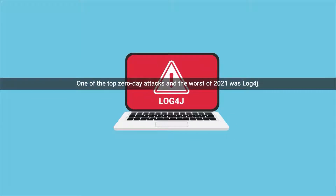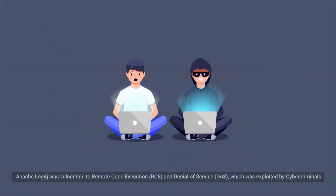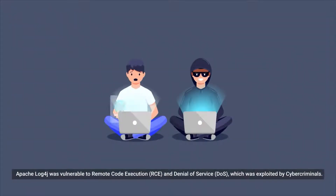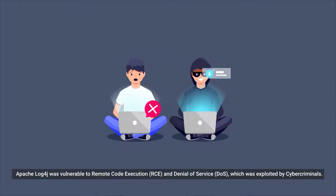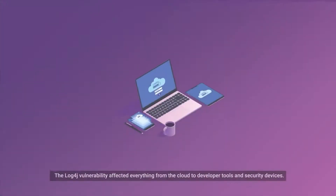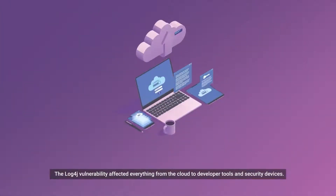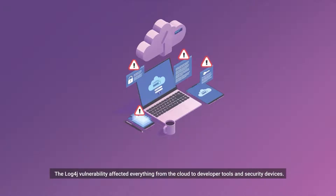One of the top zero-day attacks and the worst of 2021 was Log4j. Apache Log4j was vulnerable to Remote Code Execution and Denial of Service, which was exploited by cyber criminals. The Log4j vulnerability affected everything from the cloud to developer tools and security devices.